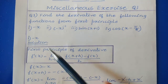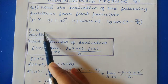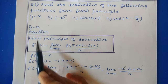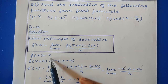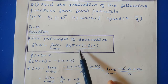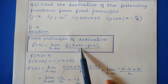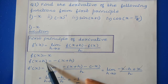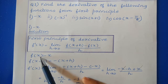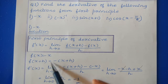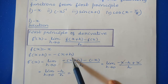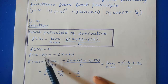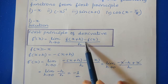First, let us take the first problem, that is minus x. So f(x) is equal to minus x. To use this formula we need f(x) as well as f(x+h). To find f(x+h), in the place of x just put x plus h. So we get f(x+h) equal to minus(x+h). Now we have these 2 values; just replace them in the formula.